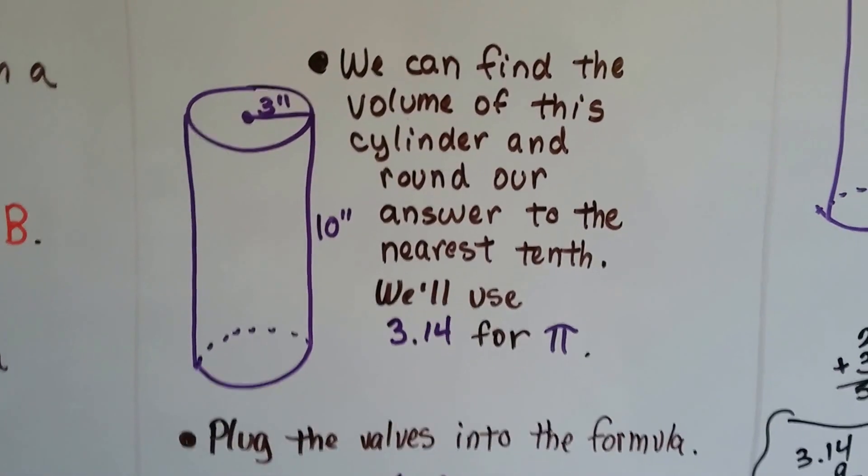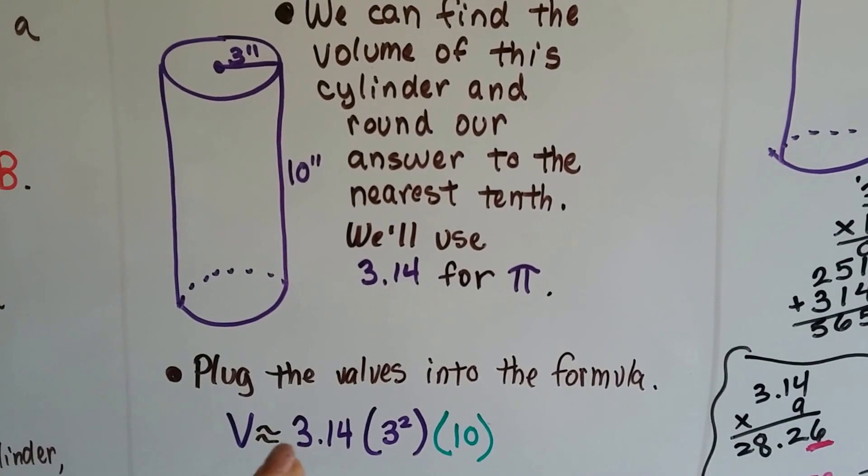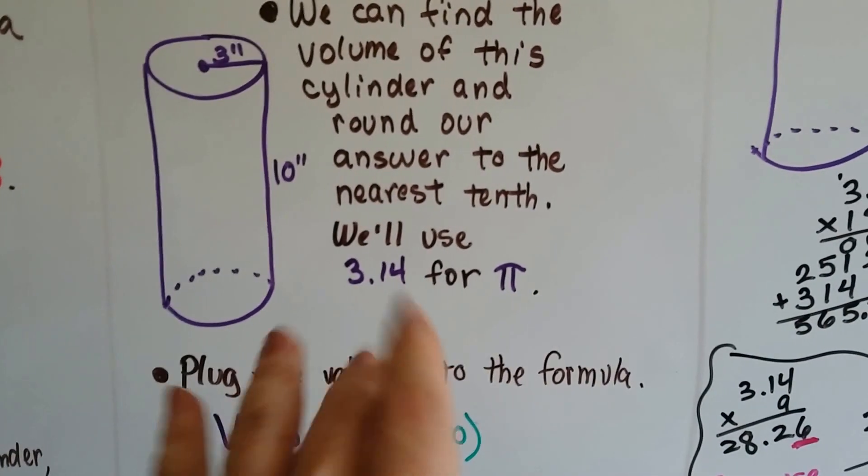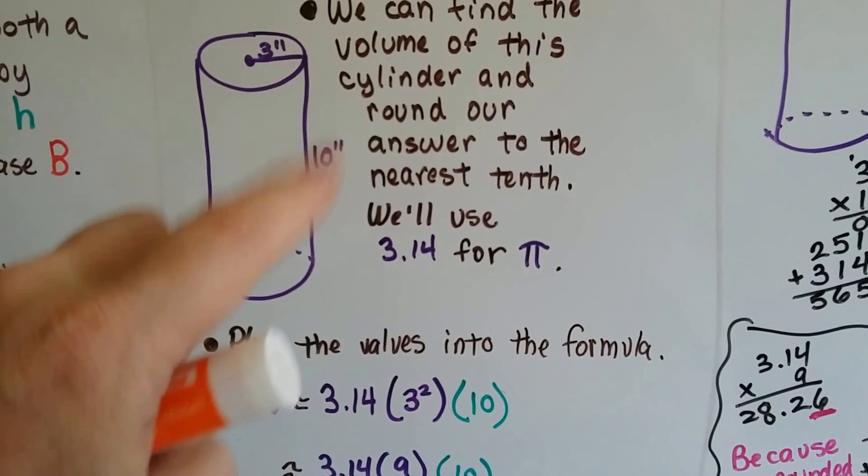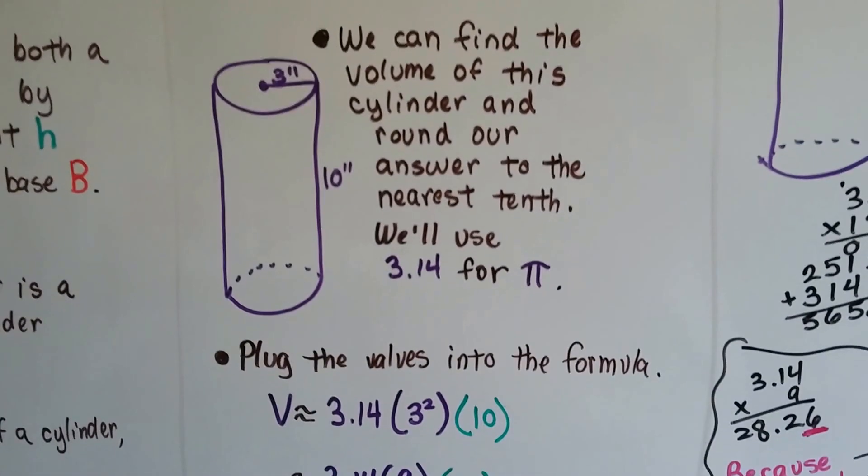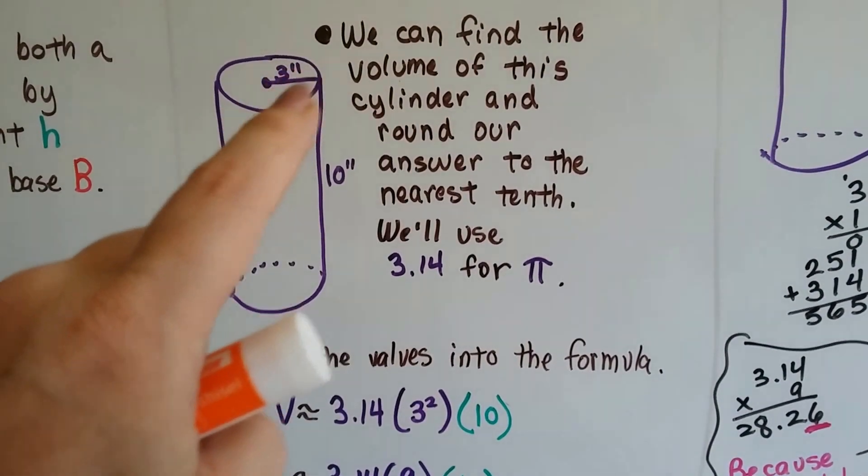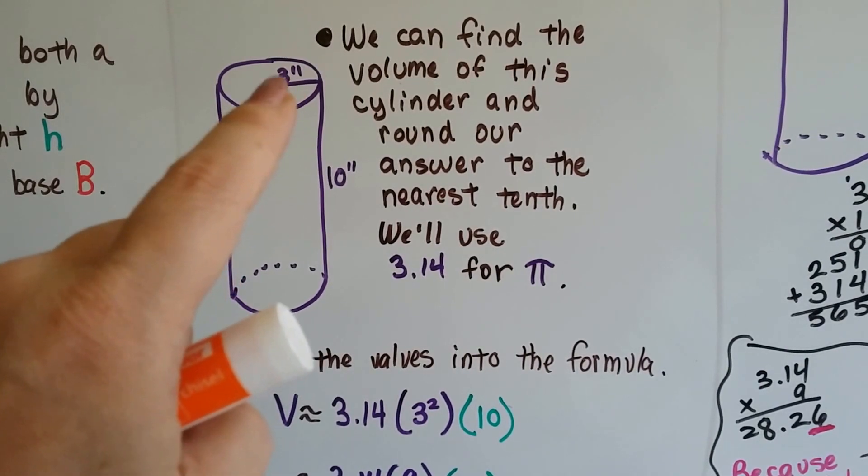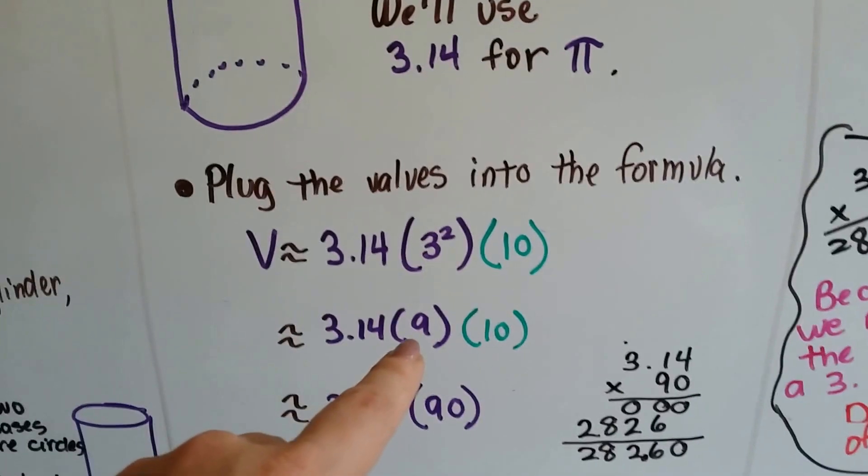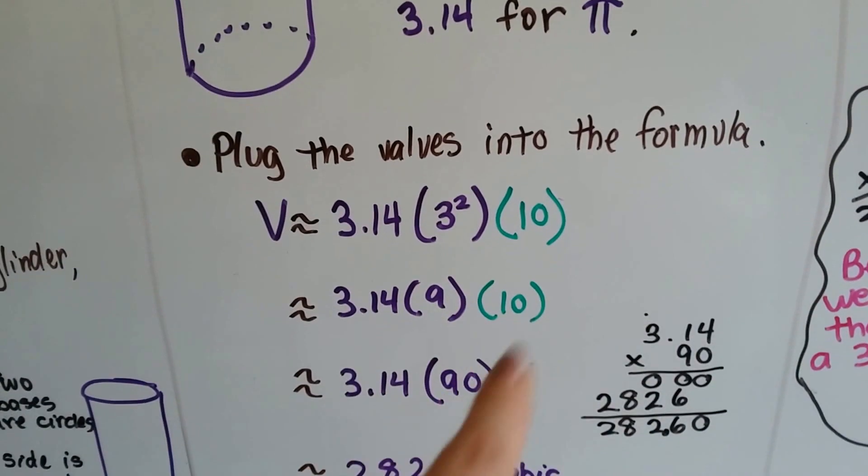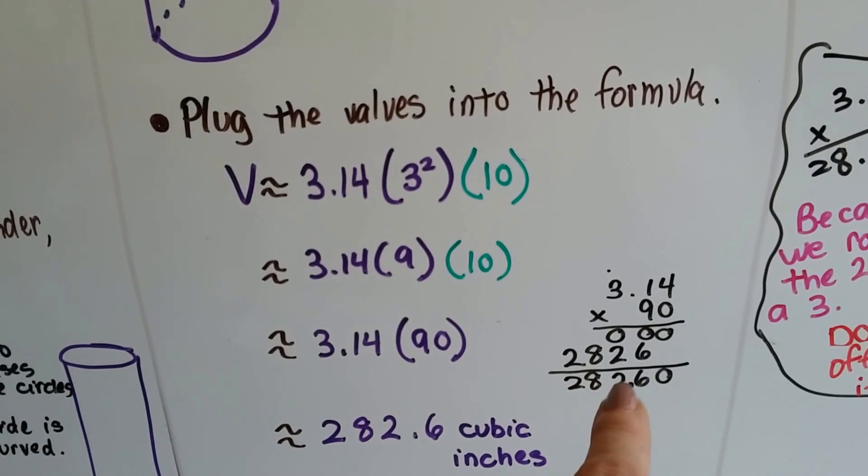We can find the volume of this cylinder and round our answer to the nearest tenth. We're going to use 3.14 for pi. And remember, because we're doing that, we have to use an approximate symbol because pi has so many digits to it that 3.14 is just going to make an approximation. All we have to do is plug in these numbers into this formula. So we've got pi 3.14 and our base is 3 inches. So that's the radius squared. So that's r squared. So 3 squared. And our height is 10. So now this is what we've got. And 3 times 3 is 9. And we drop the 10 down. 9 times 10 is 90. 3.14 times 90 comes out with a little math to 282.60.